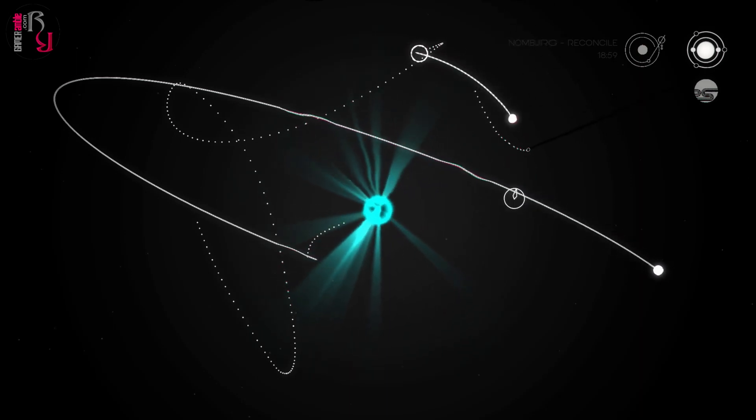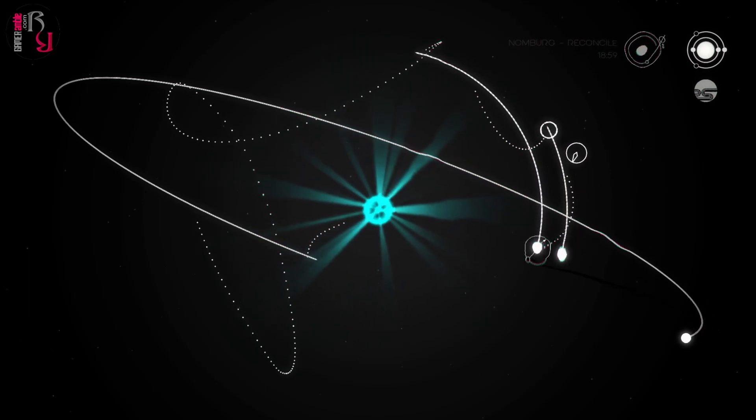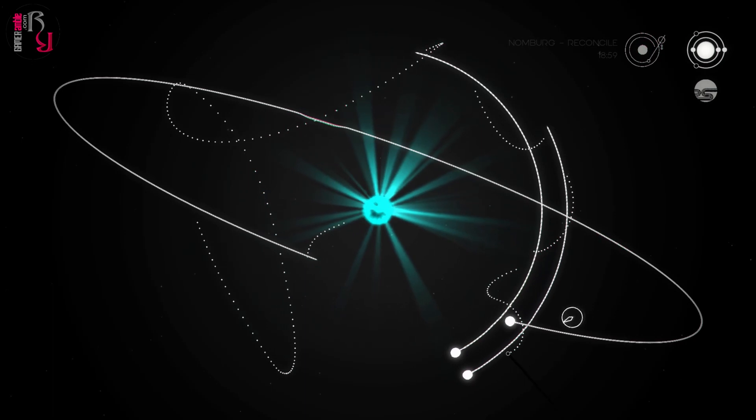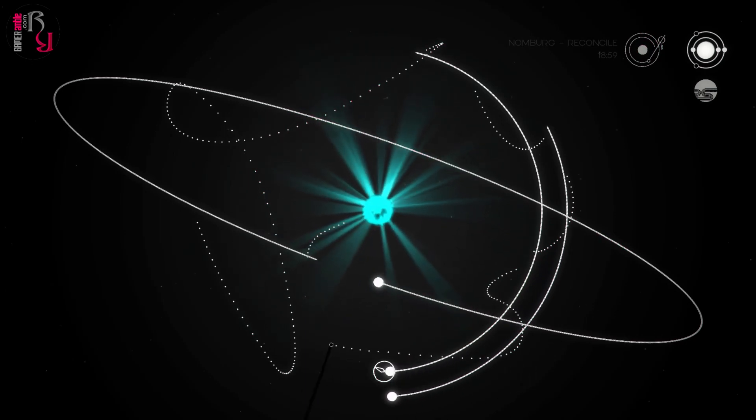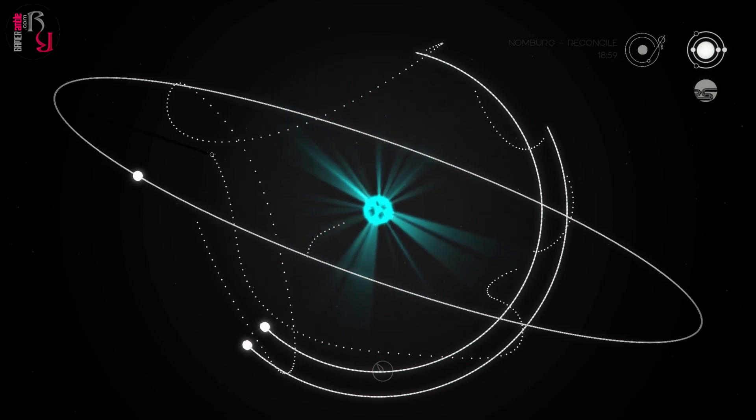While the 2D visuals are simple and monochromatic for the most part, there is a certain charm to them and they fit the style of the game perfectly. Voyager also features some great lo-fi music which makes the trippy experience of careening around the cosmos even more enjoyable.